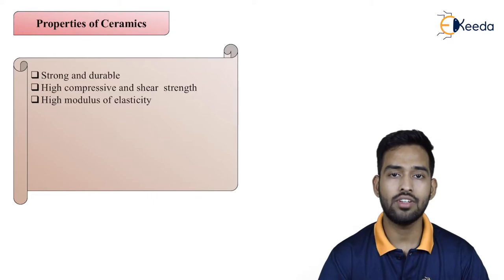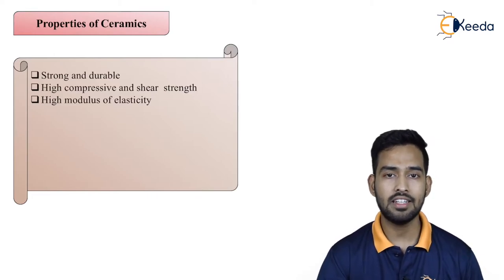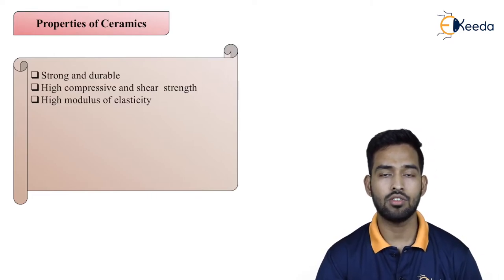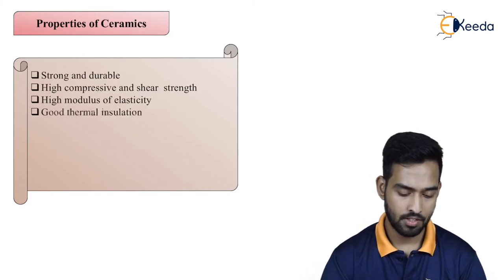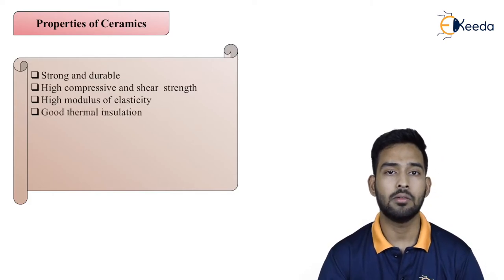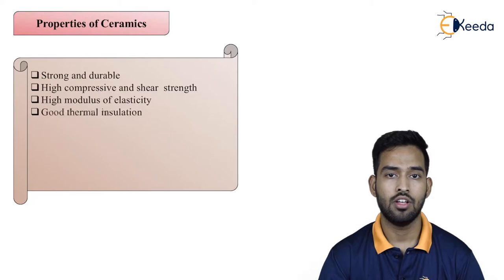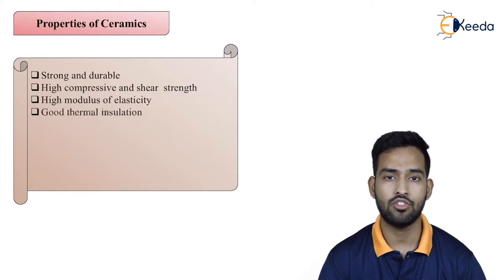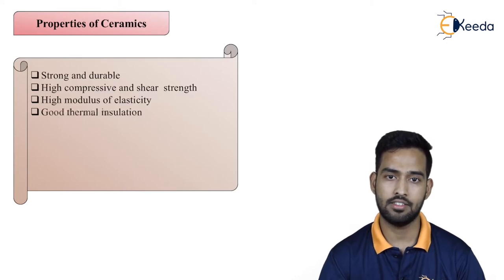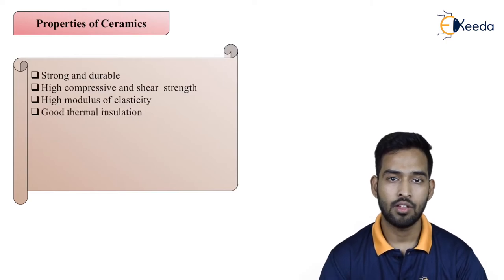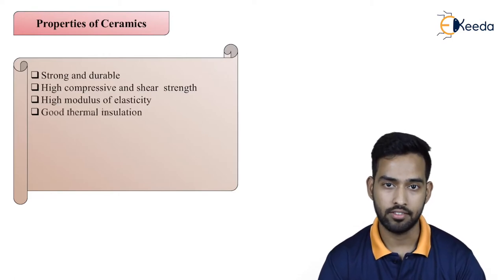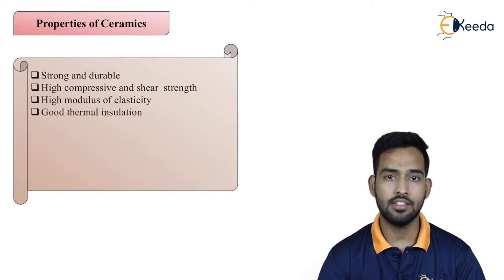The high modulus of elasticity — these materials generally have a high modulus of elasticity. Then they have good thermal isolation, meaning they will prevent heat from coming inside. Generally we use these ceramic tiles to prevent heat. Many times when we go to temples, the flooring is of such tiles that give a cooling effect even in summer season.